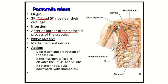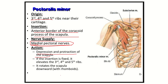It inserts into the anterior border of the coracoid process of the scapula. Its nerve supply comes from the medial pectoral nerve, which is a branch of the brachial plexus — specifically arising from the medial cord of the brachial plexus. The actions of the pectoralis minor muscle include depression and protraction of the scapula, elevation of the third, fourth, and fifth ribs, and downward rotation of the scapula.